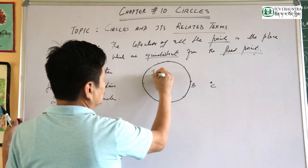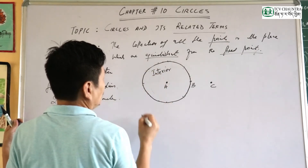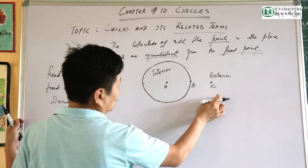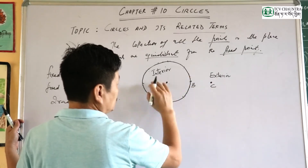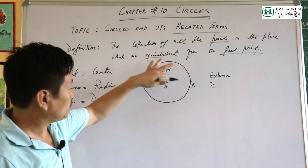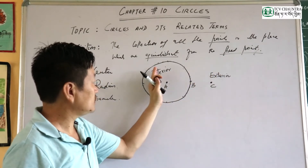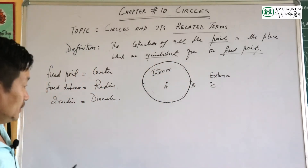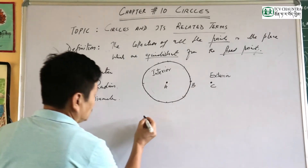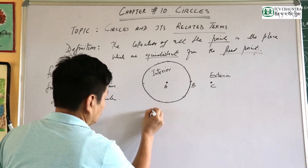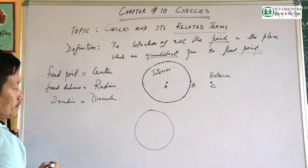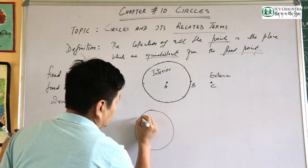The term for the region inside is the interior region. The exterior point is outside the circle, and the interior point is inside. So we have exterior and interior regions. That is the key terminology you need to know for the circle — interior, exterior, and on the circle.